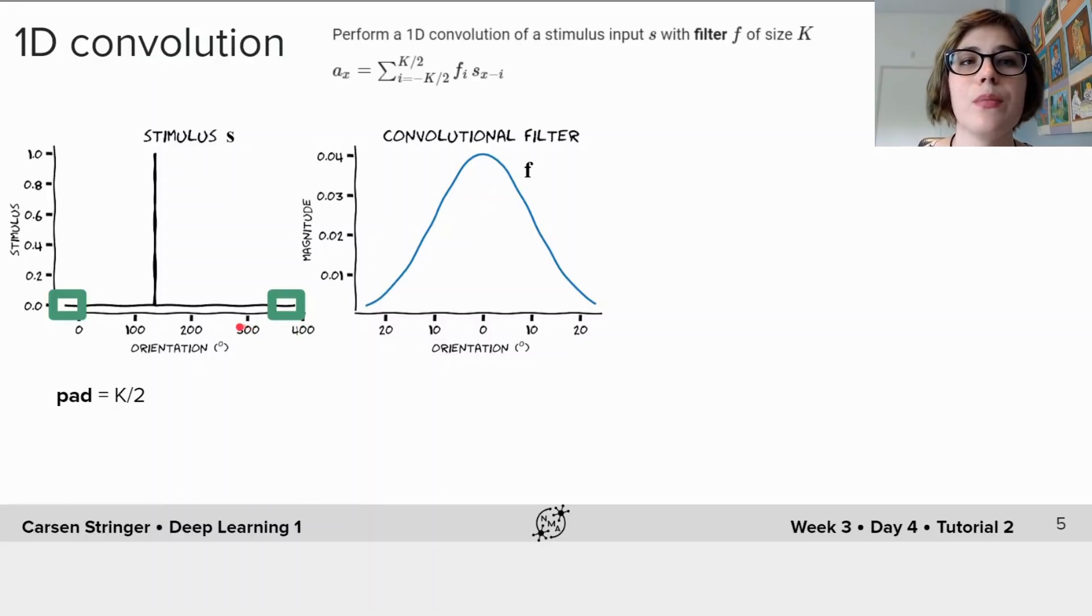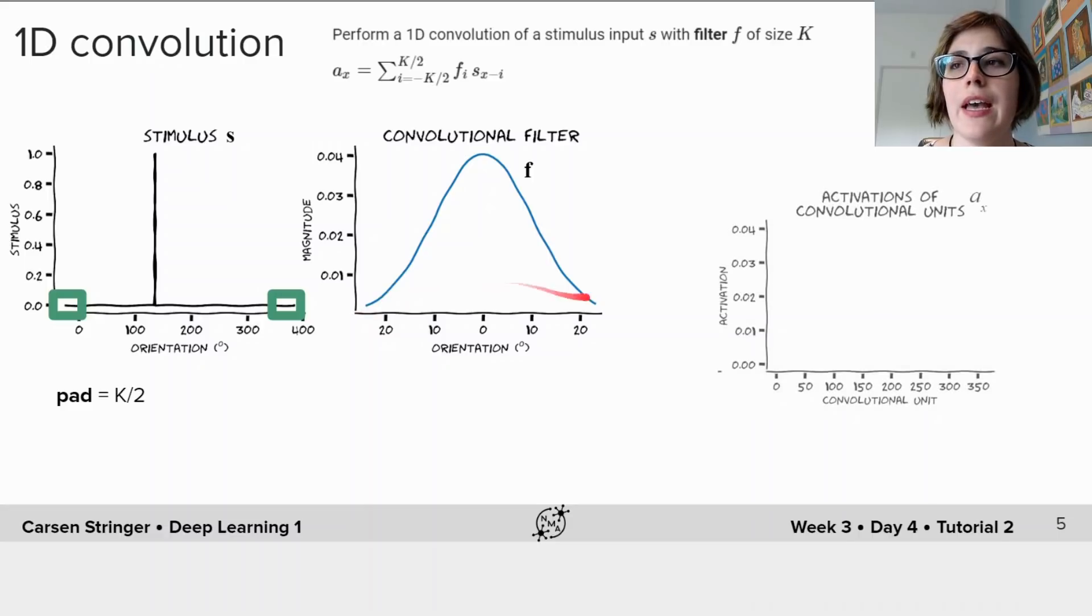Next let's compute the output of the convolution at each position x along the stimulus dimension. Each a sub x here at each position is called a convolutional unit and the size of its response after performing this convolution is called its activation.